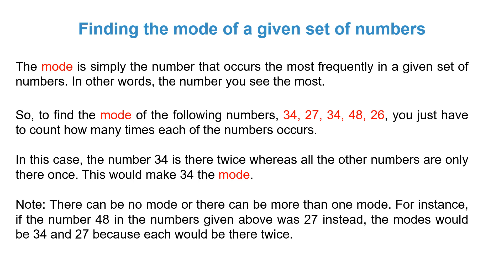Note, there can be no mode or there can be more than one mode. For instance, if the number 48 in the numbers given above was 27 instead, the modes would be 34 and 27 because each would be there twice.